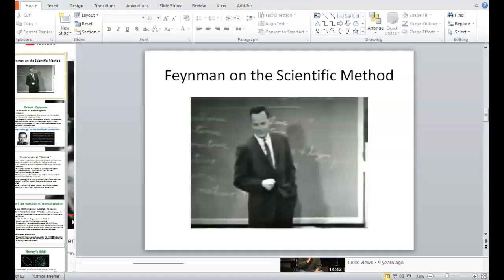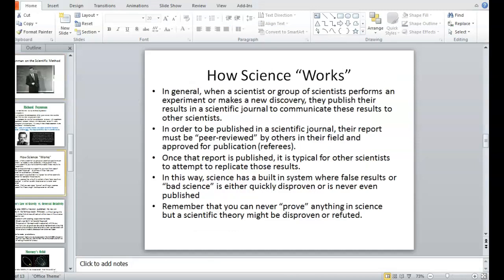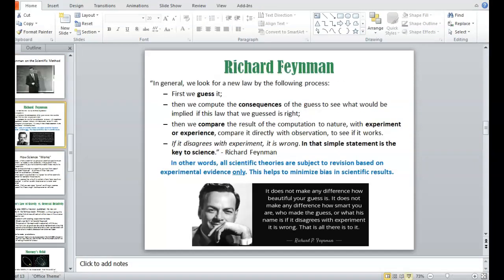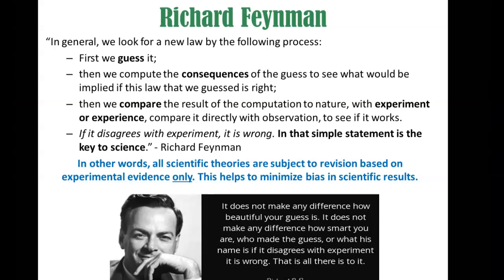That's Feynman talking about the scientific method, and in his last statement he touches on the key element of what makes science work: it all comes down to what the experimental evidence says. It doesn't matter how smart you are or who comes up with the scientific theory — if it disagrees with experiment, it is wrong. And that's coming from a Nobel Prize-winning physicist.